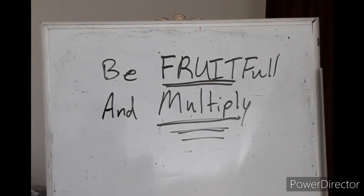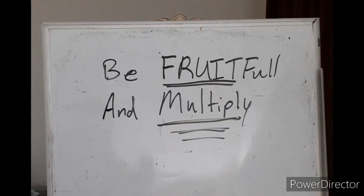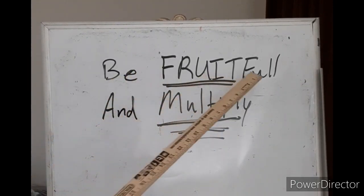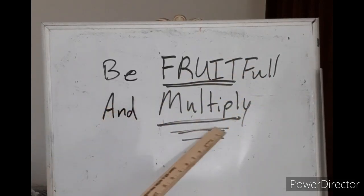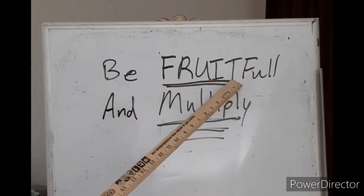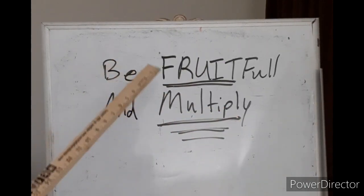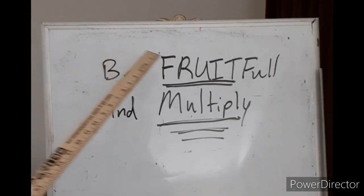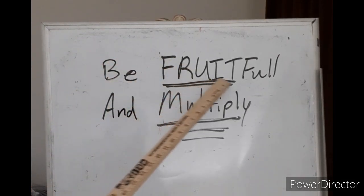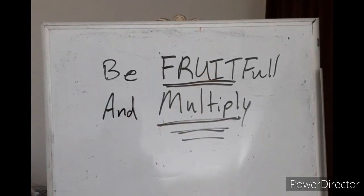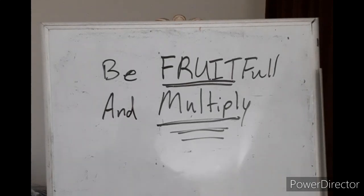We all know the verse in Genesis chapter 1, and God tells them, and I believe Genesis chapter 2 also, he says be fruitful and multiply. Notice how I underlined fruitful and multiply. So in that context, at that time in Genesis, he was talking about being fruitful and multiply. He was talking about children, right? Fill the earth with kids, multiply.